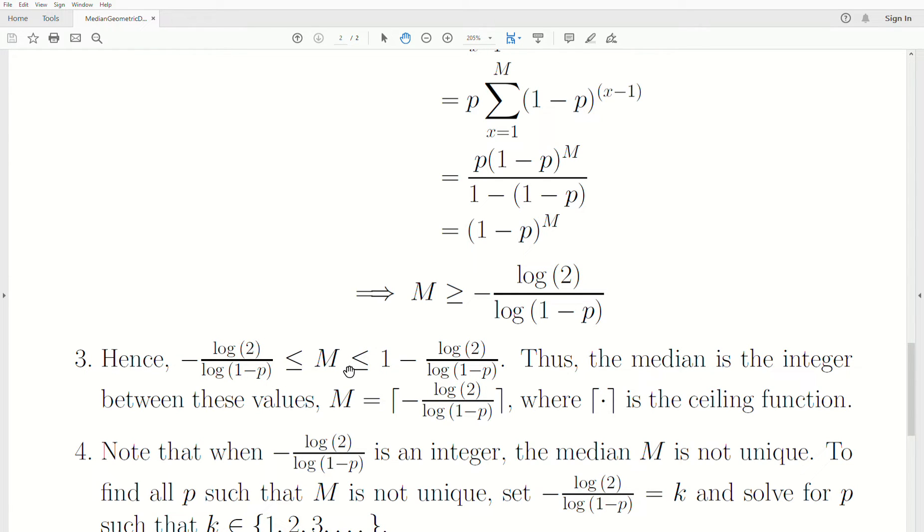M is the integer between those values. Thus the median is the integer between the values, so M can be set to the ceiling of this value here. Now note that these brackets are the ceiling function, so it's the smallest integer greater than this value.